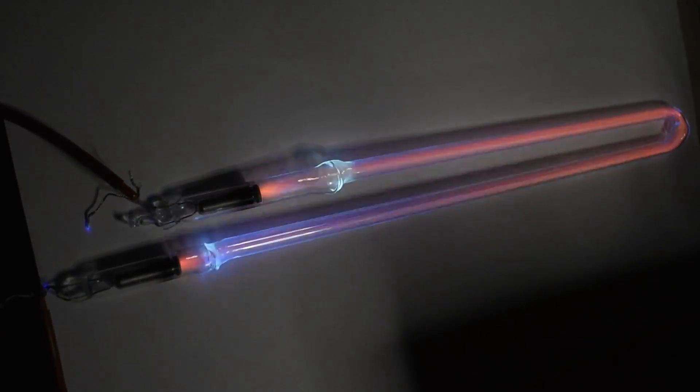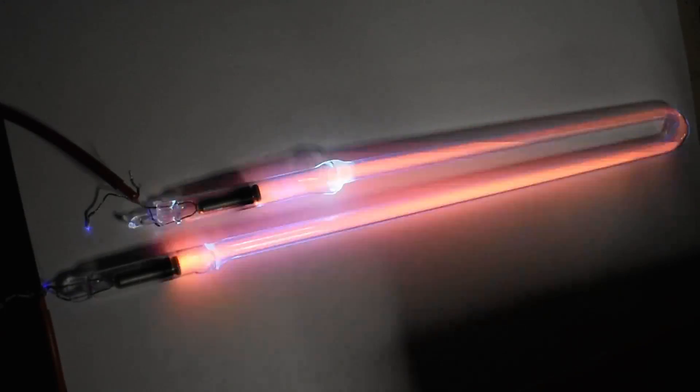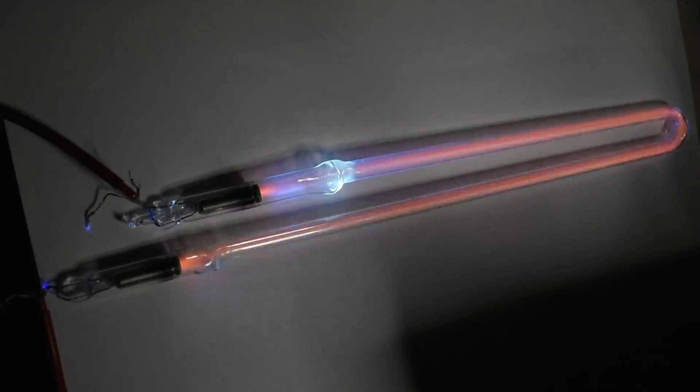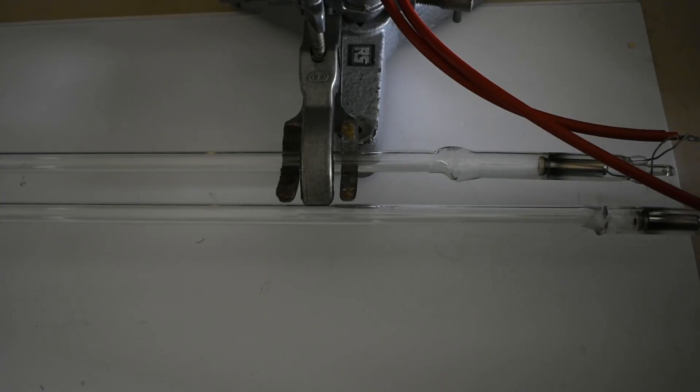This is a neon tube I made recently and it's started to fail, and it's worth looking at what the failure is. I can say it worked at the beginning. It did overheat at one point but it was working, and now it won't work on an ordinary neon sign transformer.